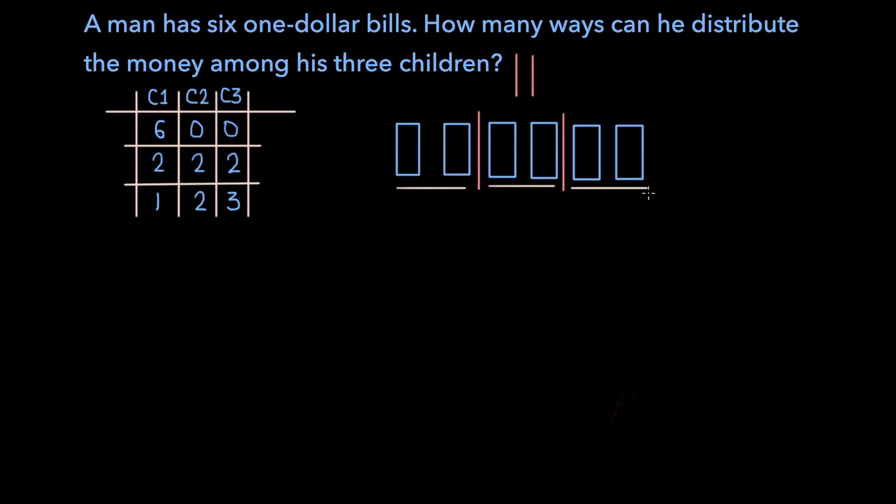So in this scenario, each child gets $2, and this is one possible way the money can be split up.